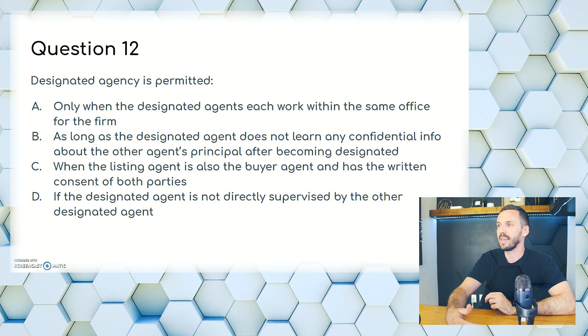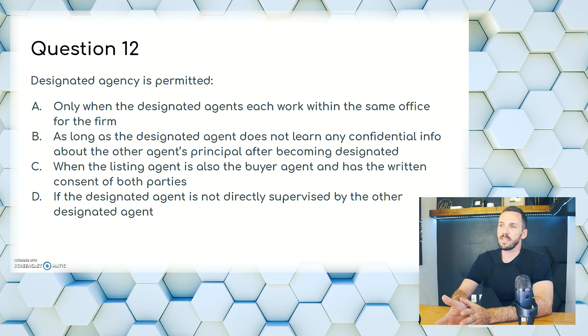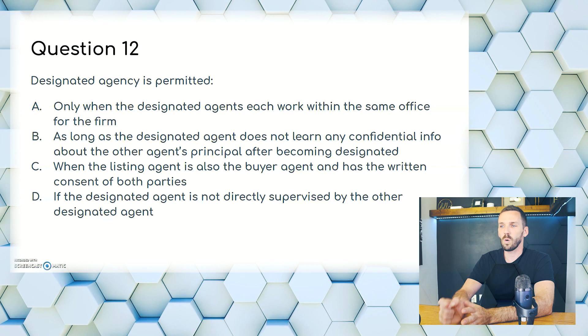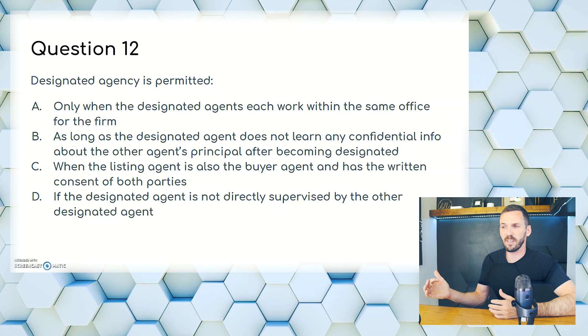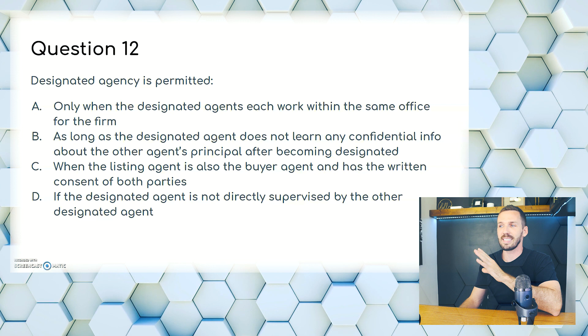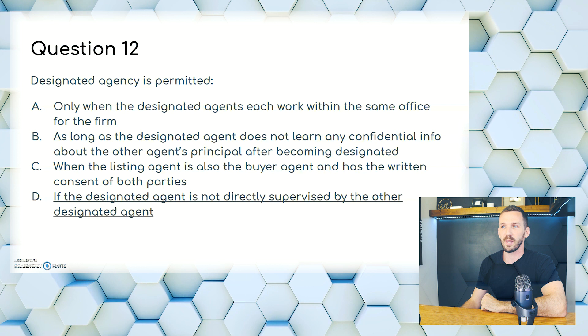Question 12. Designated agency is permitted: A, only when designated agents work within the same office; B, as long as the designated agent does not learn confidential info about the other agent's principal after becoming designated; C, when the listing agent is also the buyer's agent with written consent of both parties; or D, if the designated agent is not directly supervised by the other designated agent. A is incorrect — agents can be at different offices. B is wrong because the agent can't know confidential information at any point. C is just dual agency, not designated. The answer is D: a broker in charge and a provisional broker cannot be in a designated agency together.